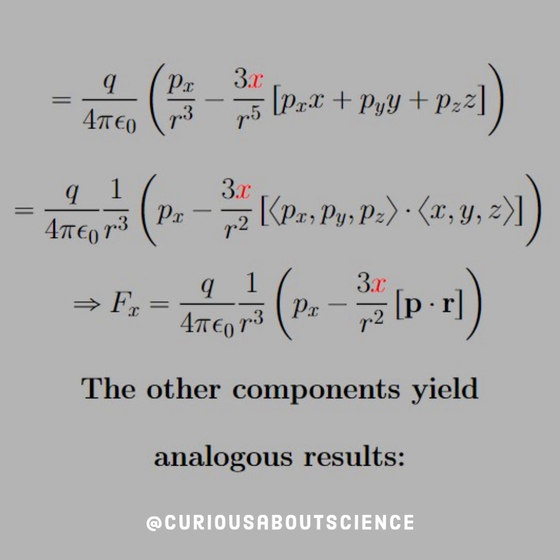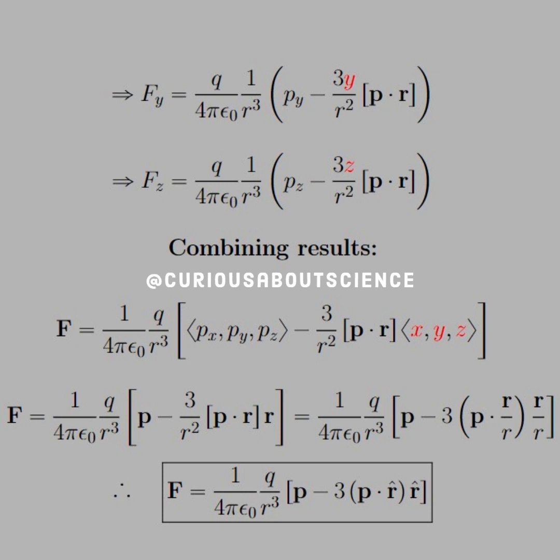This is a dot product of the dipole moment with the vector R. From here, it's easy to extrapolate to the other components, for the other components yield analogous results. We see that for F sub Y, we have everything the same, except now it's a P sub Y minus 3Y over R squared, and similarly for Z.